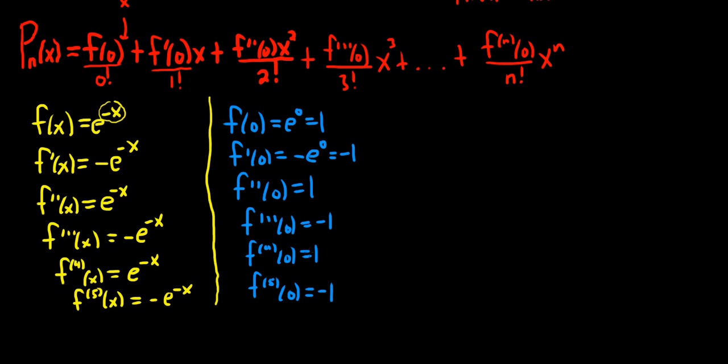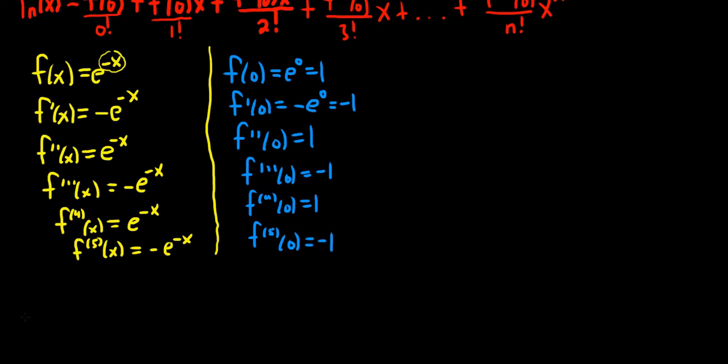All right, so now we're ready to use the formula for P5 of x. I'll go ahead and write it out completely. It's f of 0 plus f prime of 0 times x, plus f double prime of 0 times x squared over 2 factorial,